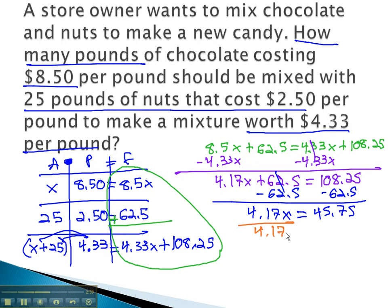Dividing both sides by 4.17, and we find out that x, the amount we need to add, is about 10.97 pounds.